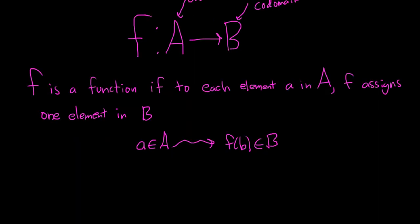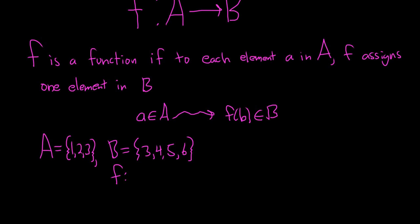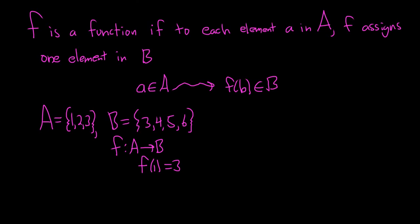Let's look at an example of a function so you see how this works. Let's say A equals {1, 2, 3} and B equals {3, 4, 5, 6}. So in this case f has A as the domain and B as the codomain. In order to define our function, we have to assign an element in B for each element in A. So we can say f takes 1 and sends it to 3 — just making this up. f takes 2 and sends it to 4. And f takes 3 and sends it to 5.